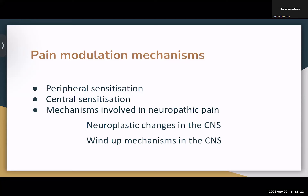There is also something called central sensitization, which occurs in the central nervous system. Normally, for one stimulus there is a certain expected amount of response — a threshold with a corresponding response. But in central sensitization, the excitability increases for below-normal threshold stimuli — essentially, the threshold itself is lowered.